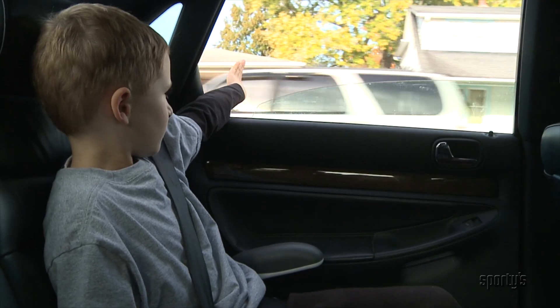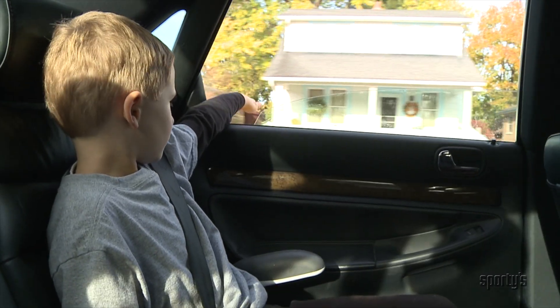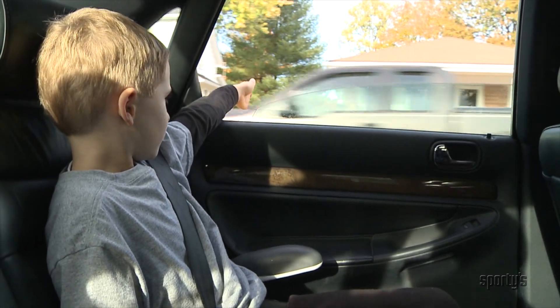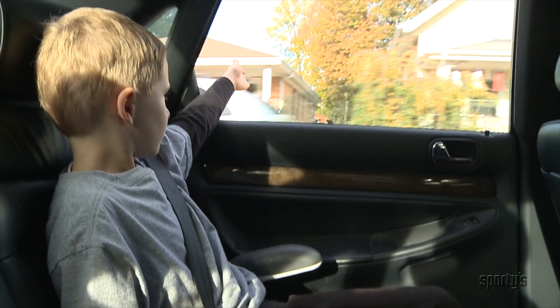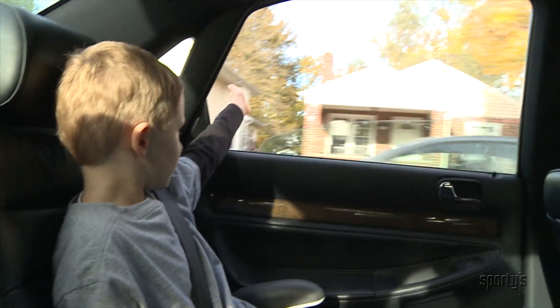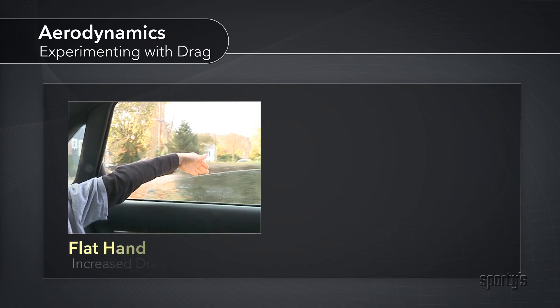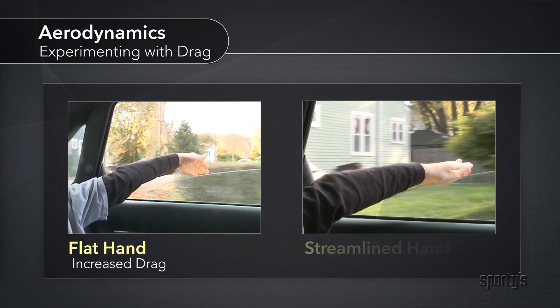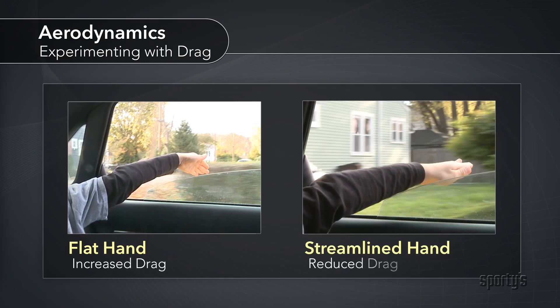Back when we were kids and held our hand out the car window, two kinds of parasite drag were evidenced. Most of the drag was form, or what is sometimes called profile drag. The form of your hand at a high angle to the relative wind caused most of the drag. Then, when you streamlined your hand to point into the relative wind, the drag decreased and became mostly skin friction drag.